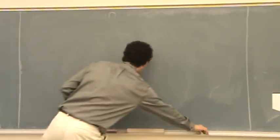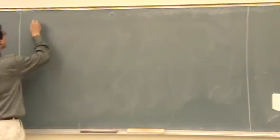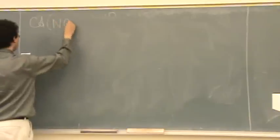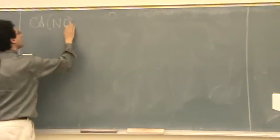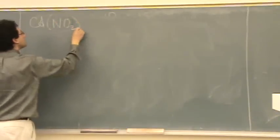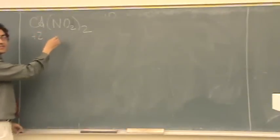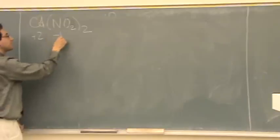Okay, naming. More examples. Cd(NO2)2. This is ionic, I know, because there's a metal there. It has to be ionic. One of our transition metals, it's cadmium. This cadmium has to have a plus 2 charge, because I know that this nitrite has a minus 1.